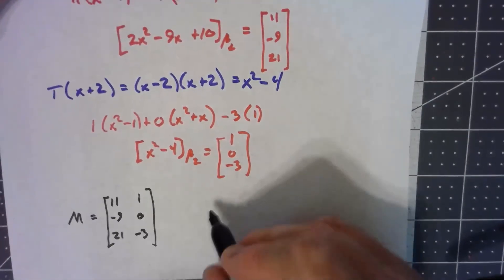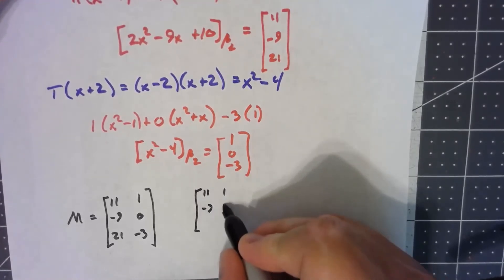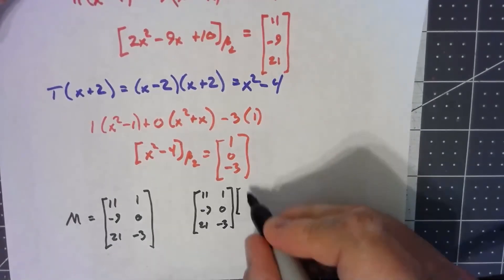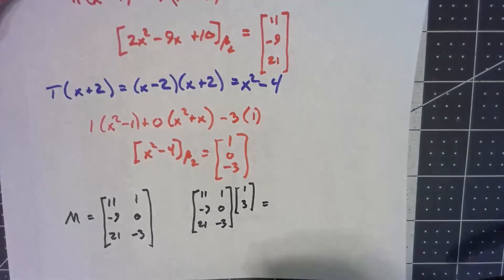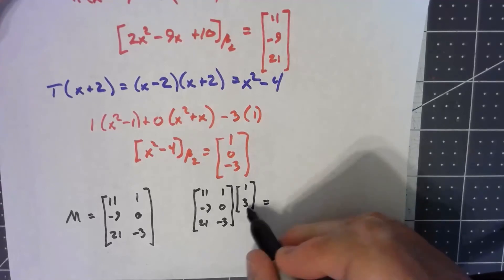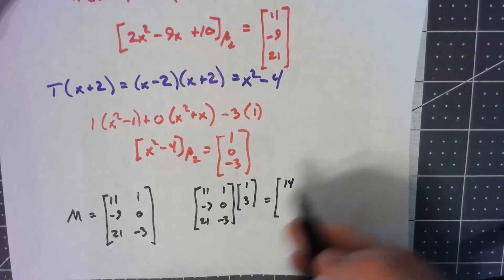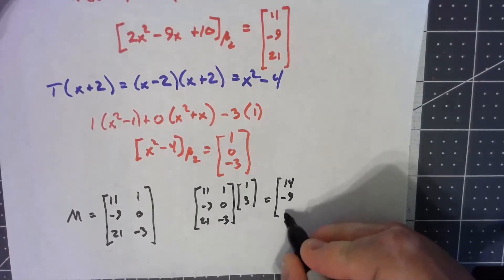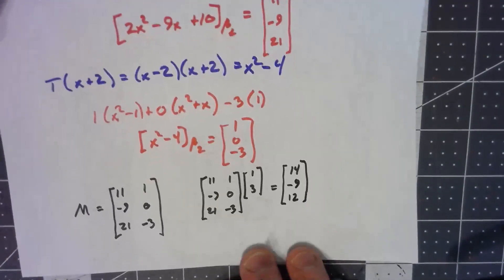So if I were to take that matrix M times some two-dimensional vector, let's say 1, 3, certainly we can calculate that. We get 11 plus 3 gives me 14, negative 9 plus 0, 21 minus 9. Look at that.